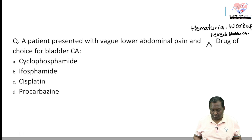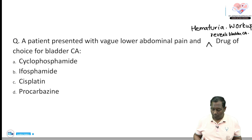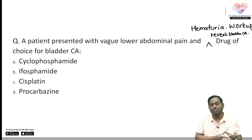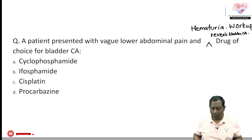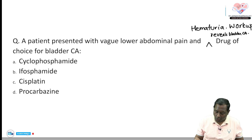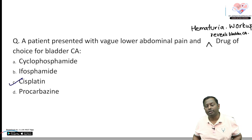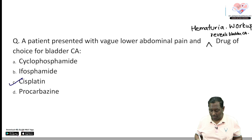The very first question: a patient presented with vague lower abdominal pain and hematuria; workup reveals bladder carcinoma. What is the drug of choice? Even without the history of hematuria and vague abdominal pain, the last line alone is enough — bladder cancer, drug of choice. The drug of choice for all genitourinary carcinoma is cisplatin, which is a platinum compound.